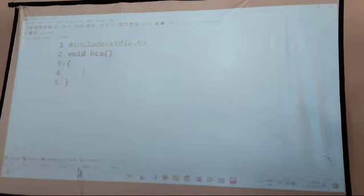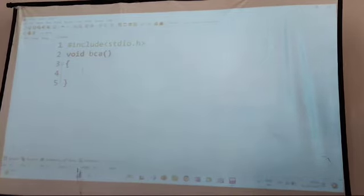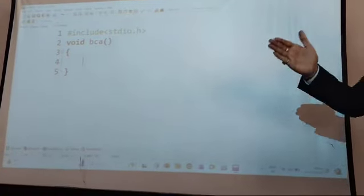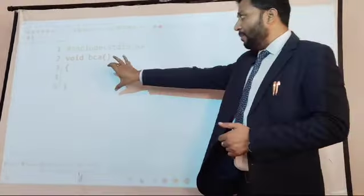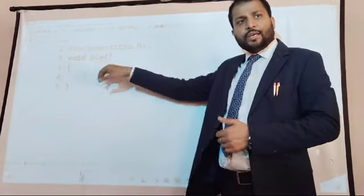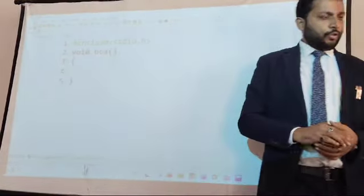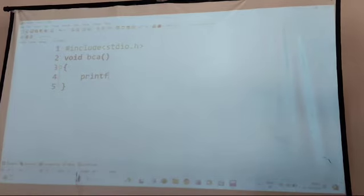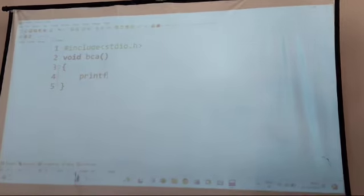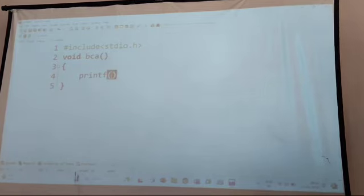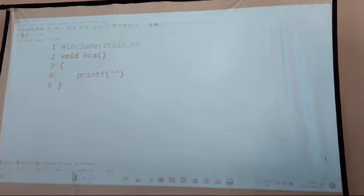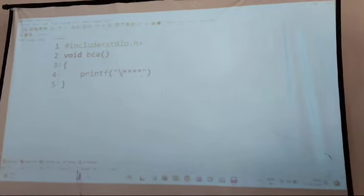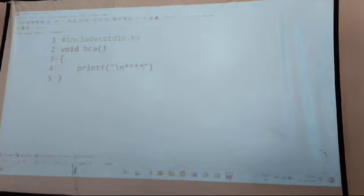After that we are going to write a program for odd and even number generation. So first of all we must provide a user-friendly message. So what we will write, printf. Printf is what type of function? Predefined. Predefined means it's an auto function. So here printf and we will write star marks, and here we will use like this format.